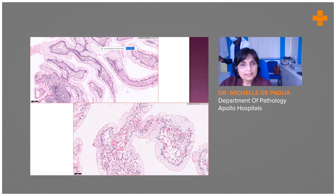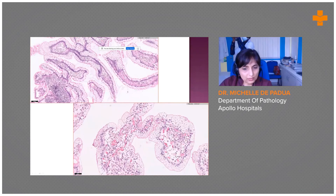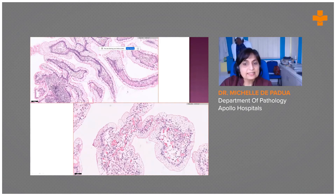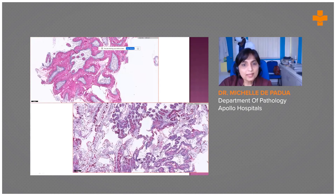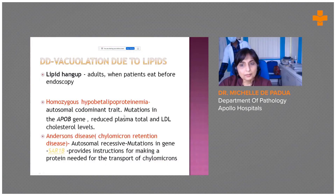Comparing the two cases, even on H&E section you can see the difference: in the comparison case the vacuolations are clearly exaggerated goblet cells, whereas in our case it is fine vacuolation. Sometimes the findings can be subtle, and sometimes quite striking. If you have doubt, you can perform a PAS stain — if it is mucin it will be PAS positive, whereas if due to lipids it will be PAS negative, as in our case.